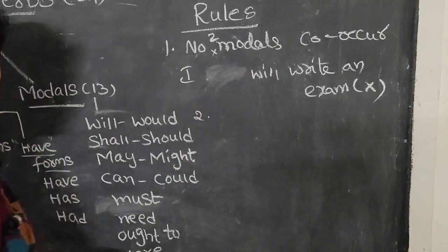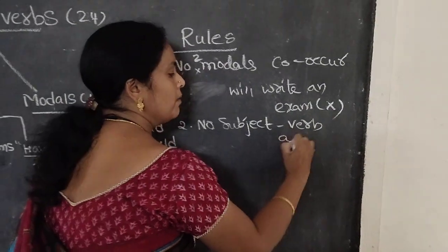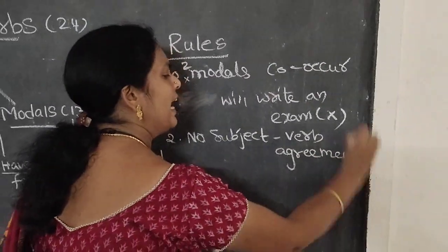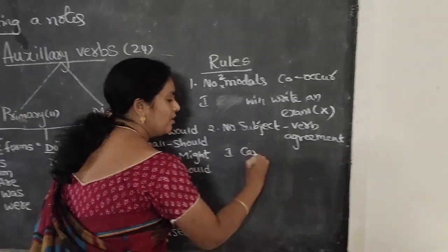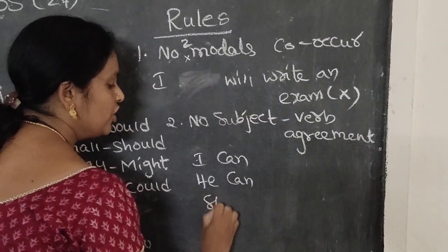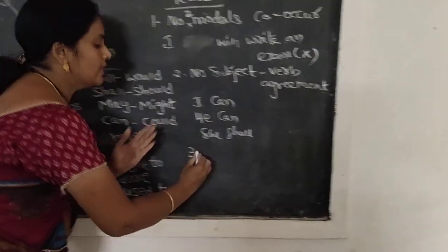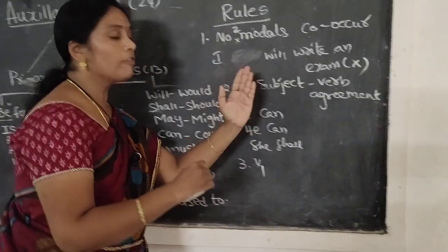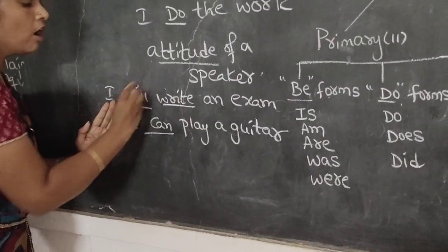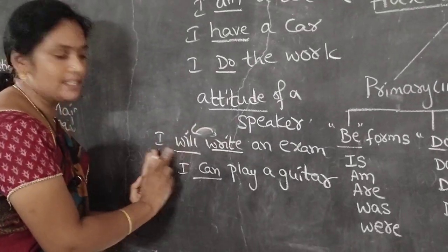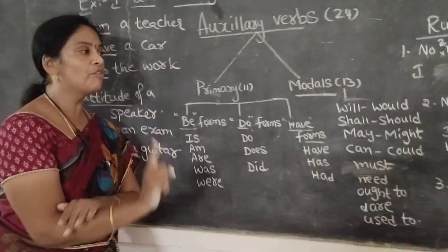The second rule: no subject-verb agreement. That means you can use any subject with the modals. I can write, he can write, she can write — no agreement needed. The third rule: the verb always comes in base form after auxiliaries. That means: I will write an exam, I can play guitar. Always bare infinitive after modals. So these are the rules you have to follow.